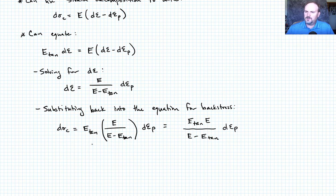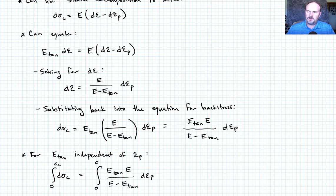So, in the event that, just like before, the tangent modulus was the same with respect to epsilon p, we could integrate both sides again, and write that integral now from sigma c begins at zero, so it starts at zero, goes up to whatever sigma c looks like. That's going to be equal to integrate the other side. Of course, epsilon p begins at zero and goes up to epsilon p. So we can write that sigma c is equal to e tan times e divided by e minus e tan times epsilon p.